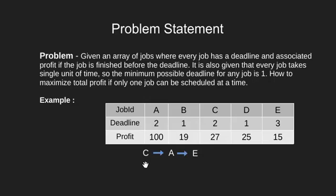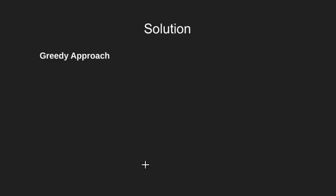Think about what we are doing to maximize our profit. We are selecting the job with maximum profit and scheduling it at the latest time that meets its deadline. Nothing is gained by scheduling it earlier. So the best possible method is to use a greedy approach.